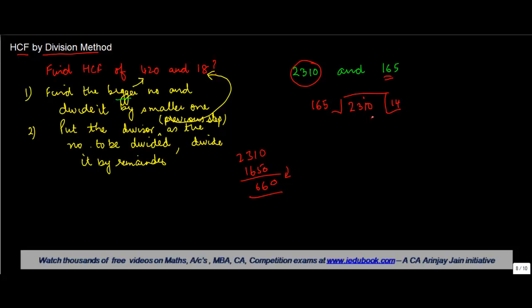Okay. So, 14 into 5 gives you 70, 0, 7 carry. 14 into 6 gives you 84 plus 7, 91, 1, 9 carry. 14 ones are 14 and 9 gives you 23. Well, interestingly, in this case, we have got a 0 in the first step itself which means that 165 is the highest common factor of 165 and 2310.